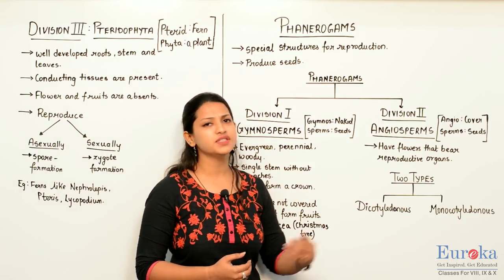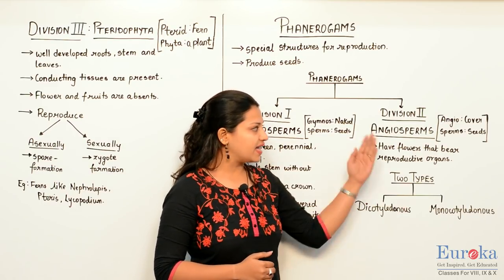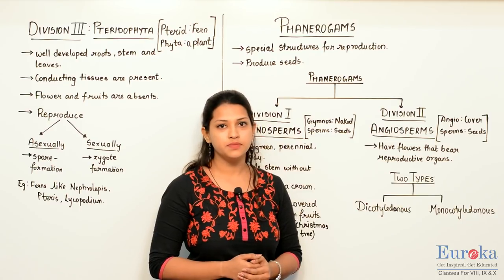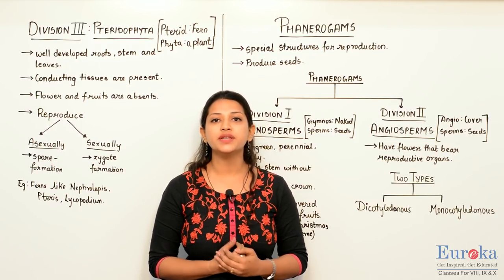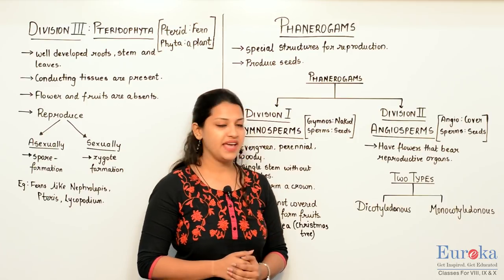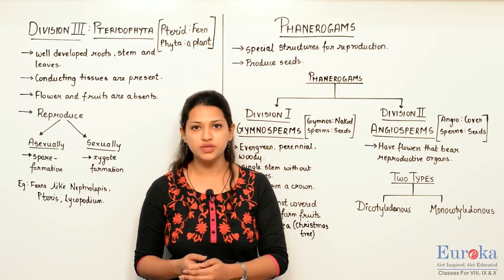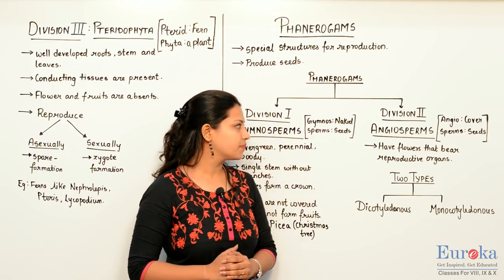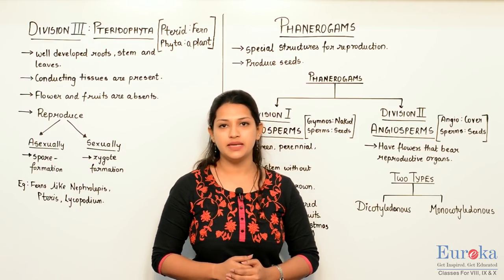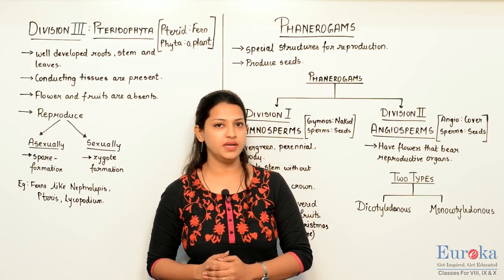Angiosperms — 'angio' meaning covered, 'sperms' meaning seeds — have seeds which are covered in a fruit. They have flowers that bear the reproductive organs. The flower further forms the fruits which contain the seeds. Angiosperms are divided into two types: dicotyledonous plants and monocotyledonous plants.